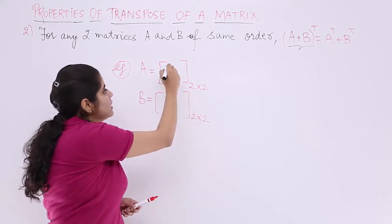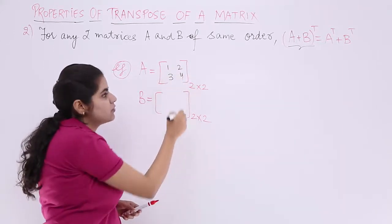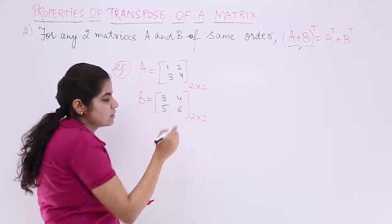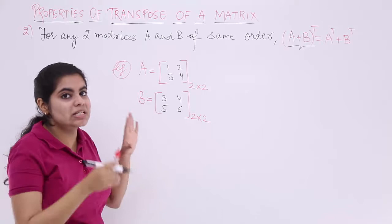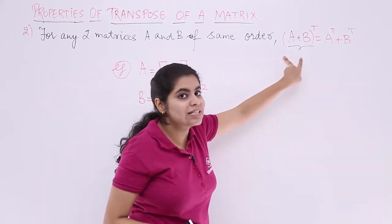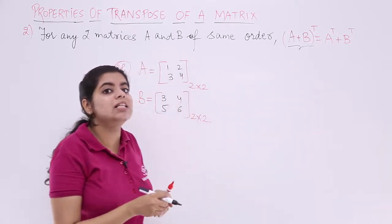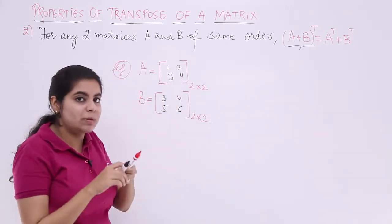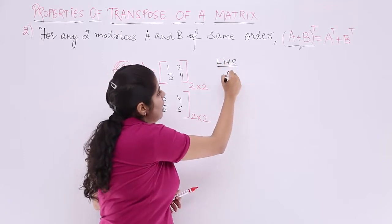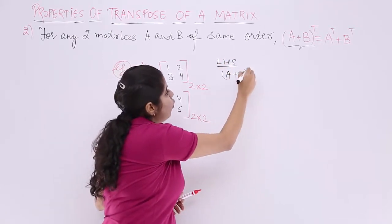Now what we are going to do is we'll be seeing some values in this matrix. Say it is 1, 2, 3, 4. It is 3, 4, 5, 6. These are A and B matrices which are given to us. Now we are supposed to prove these things. Let's take LHS, A plus B transpose we are supposed to do. So we are taking LHS first. What does my LHS say? I have to compute A plus B whole transpose.